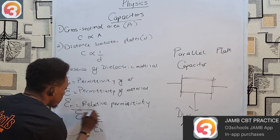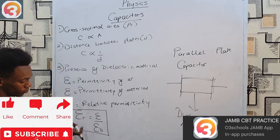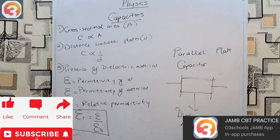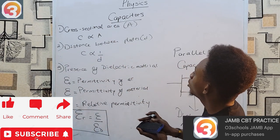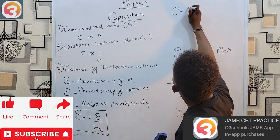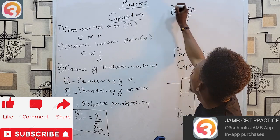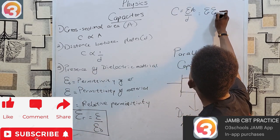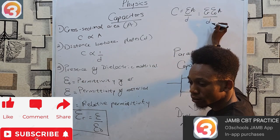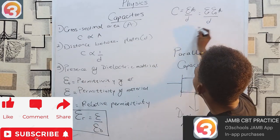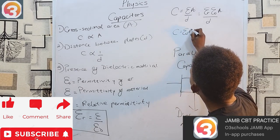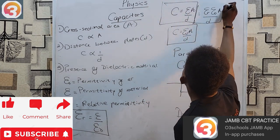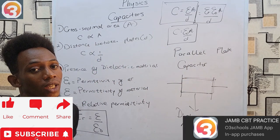Relative permittivity measures the ratio of the permittivity of any material to the permittivity of air. Combining all these factors into one equation gives us: capacitance C = εA/d, where epsilon can also be expressed as relative permittivity times the permittivity of air (ε_r × ε₀), giving C = ε_r ε₀ A/d. If the medium is simply air with no dielectric material, then C = ε₀A/d.